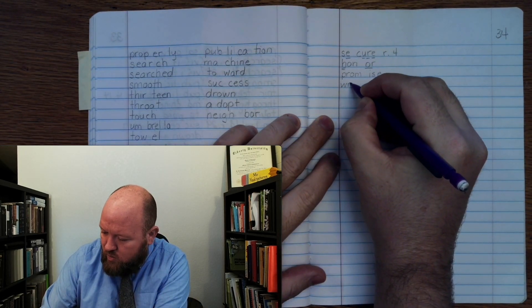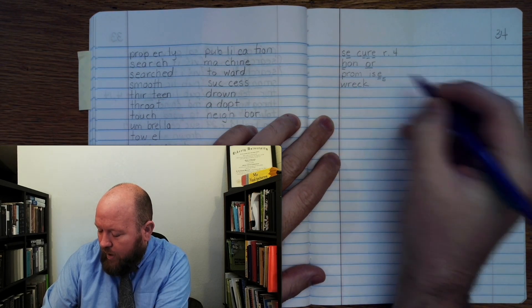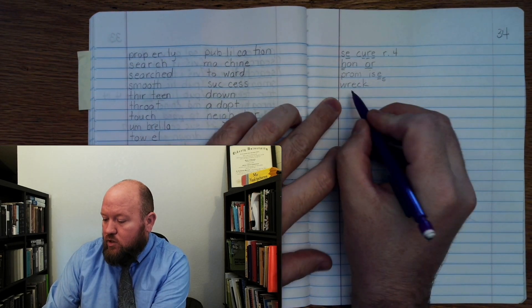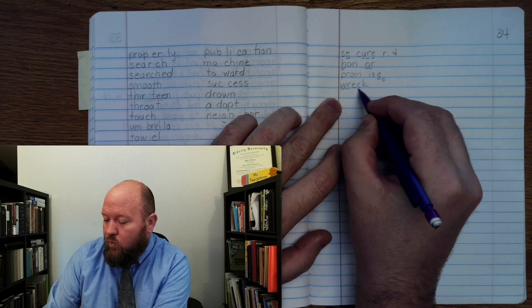Wreck. R, E, K. Wreck. Markings. R once. E, K once.